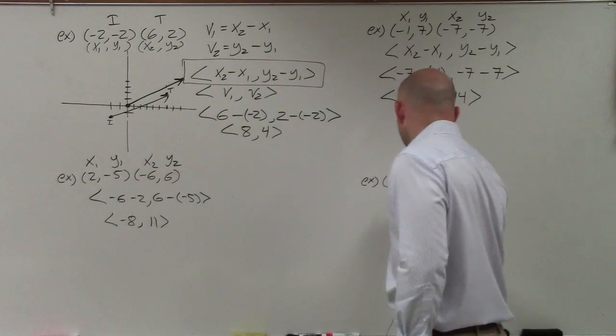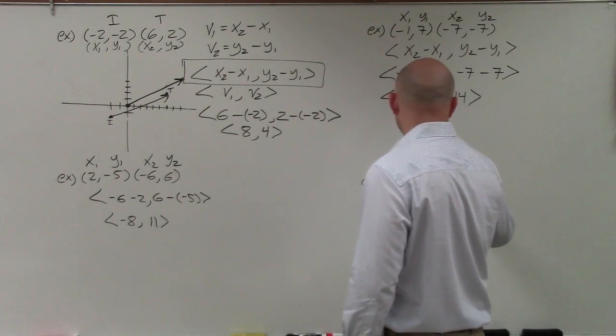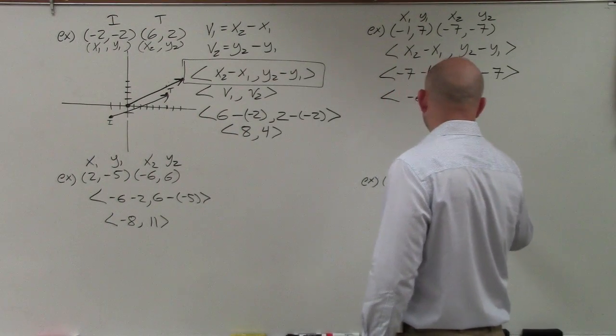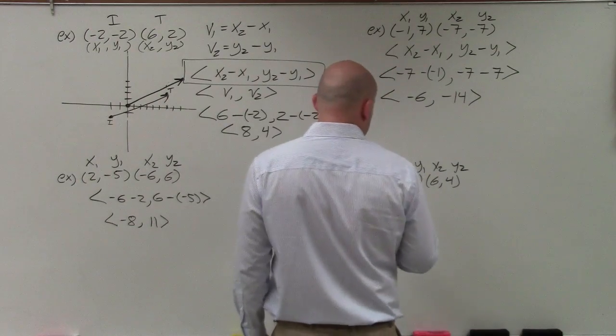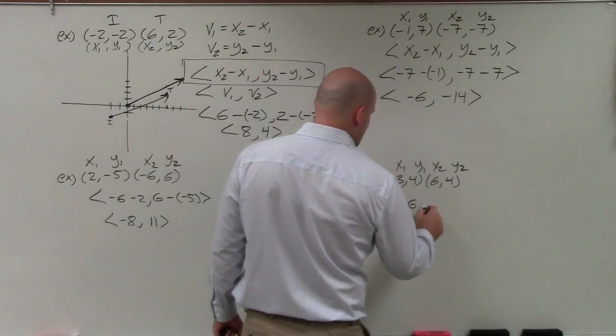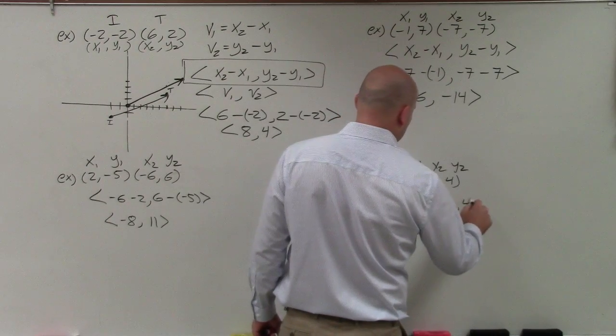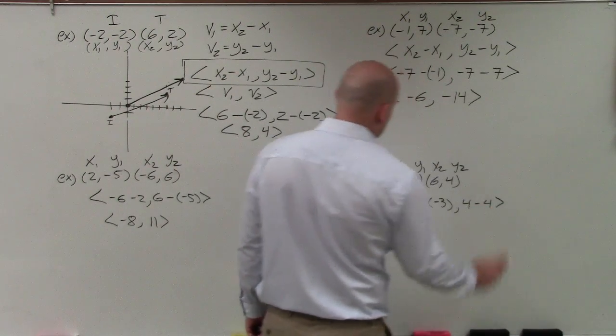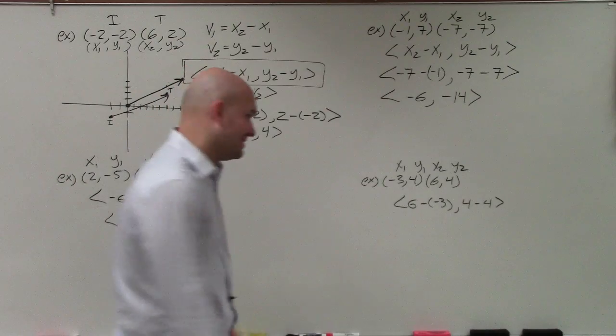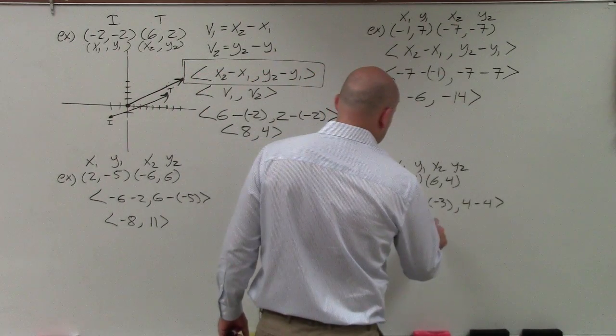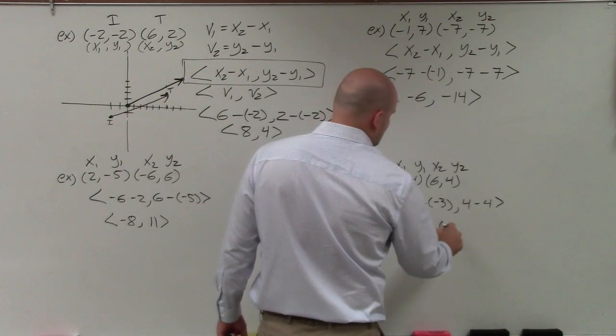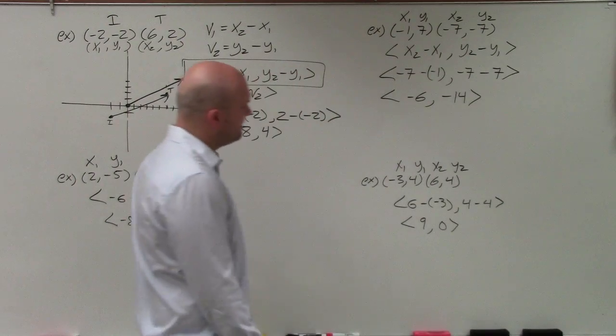All right, last one. So let's label x1, x2, y1, y2. So therefore, we have 6 minus a negative 3 comma 4 minus 4. So 6 minus a negative 3, again, is going to leave me with 9. 4 minus 4 is 0. And there you go.